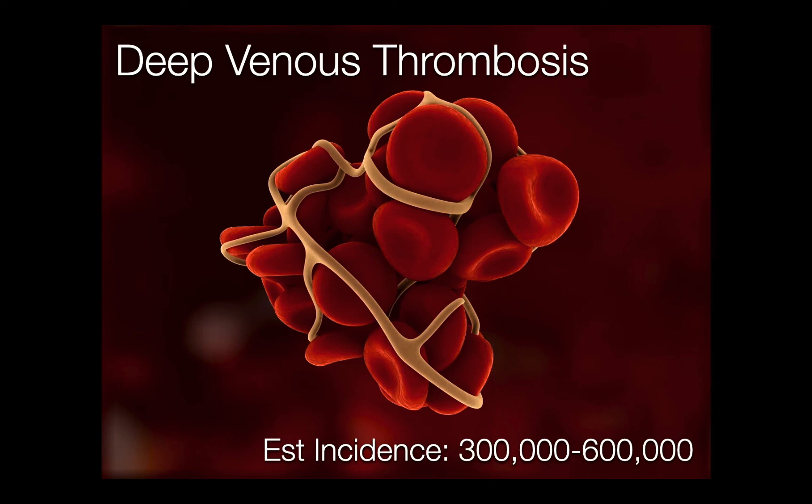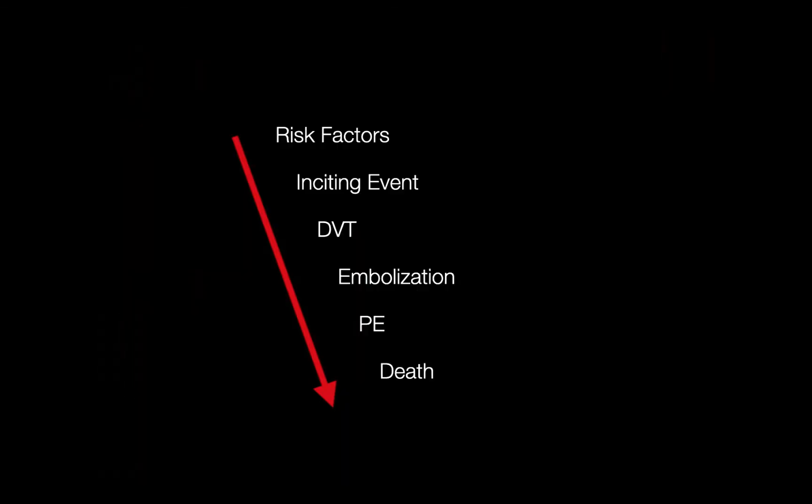In this portion of the talk, we're going to discuss the use of ultrasound to evaluate for deep vein thrombosis, or DVTs. This is a relatively common presentation to the emergency department. What we really don't want to see — but what can happen — is that a DVT can embolize and become a pulmonary embolism, or PE, which has significant consequences for the patient in both morbidity and potential mortality.